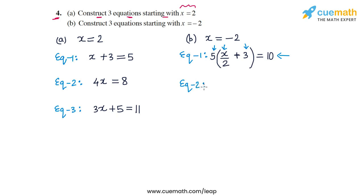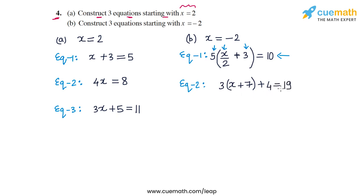For the second equation, let's add 7 to x: x plus 7 gives 5. Multiply by 3 to get 15, then add 4 to get 19. So the equation 3(x + 7) + 4 = 19 is also satisfied by x = -2.